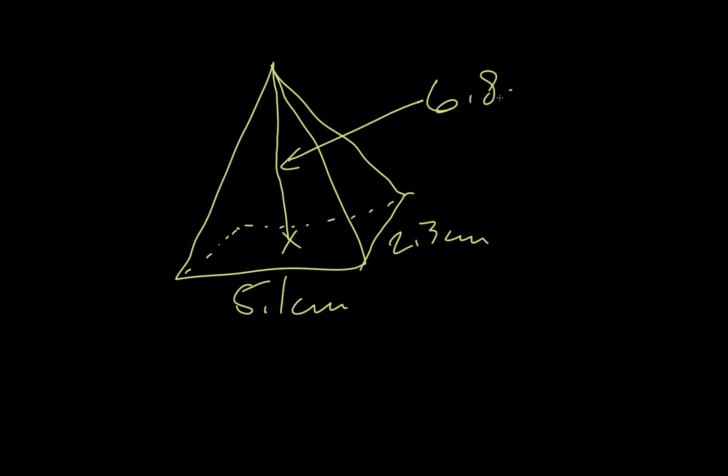So this one wants us to find the volume of each of these solids. There's two of them and we have a pyramid. This side is 2.3, this is 5.1, and then the height of that is 6.8.